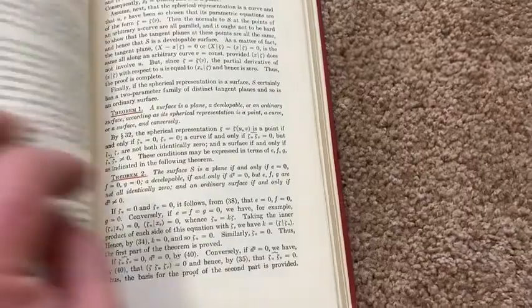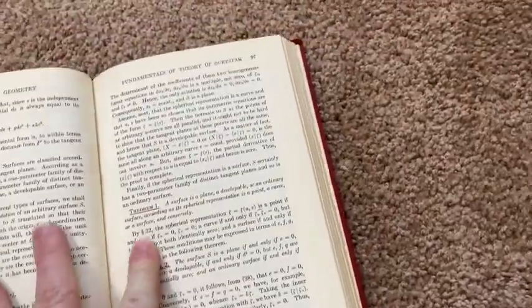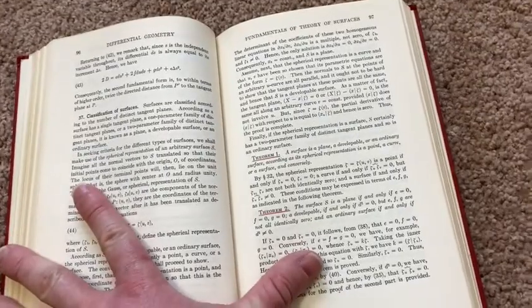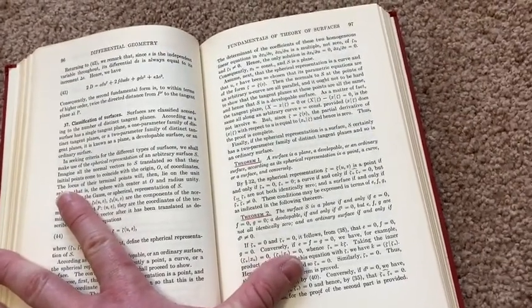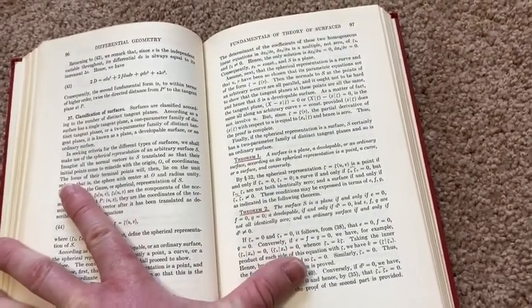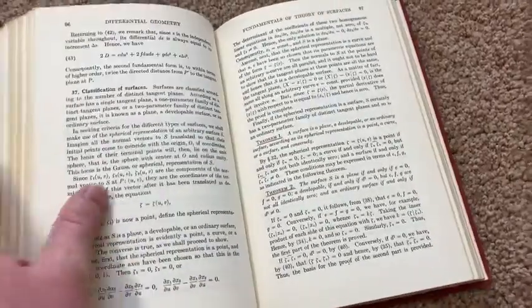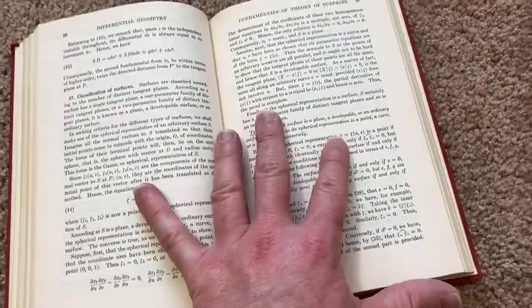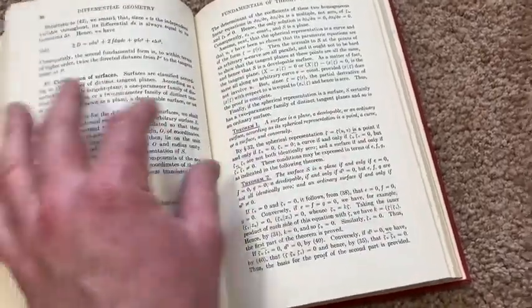We can still see underlining in the latter chapters of the book. A lot of times in math books, you'll find that there's more writing at the beginning. That's because people start off really motivated and lose motivation as they get further into the book.